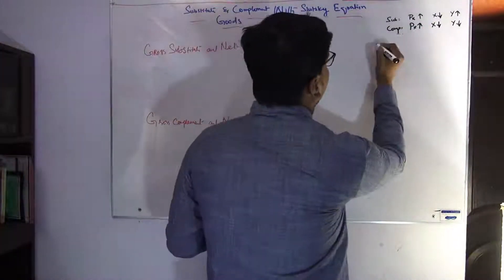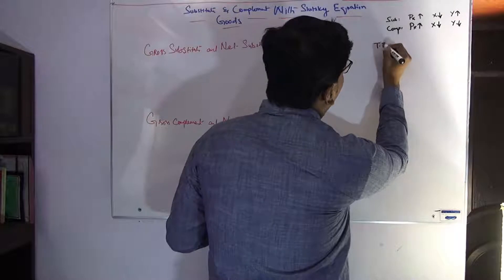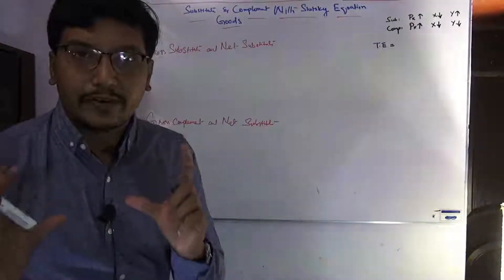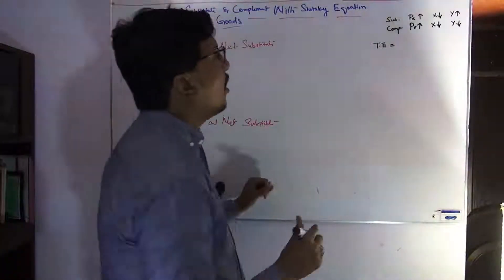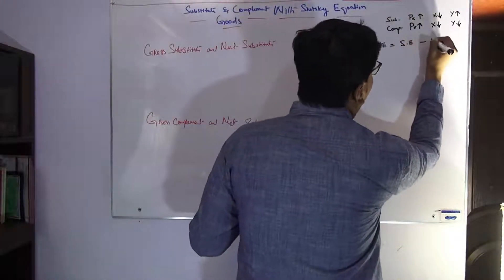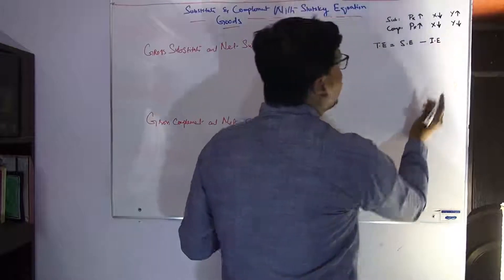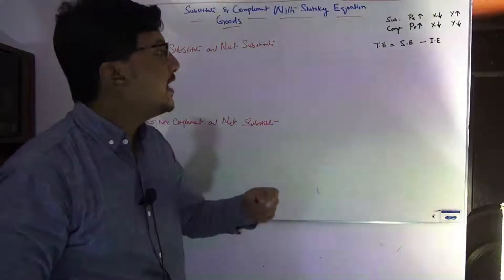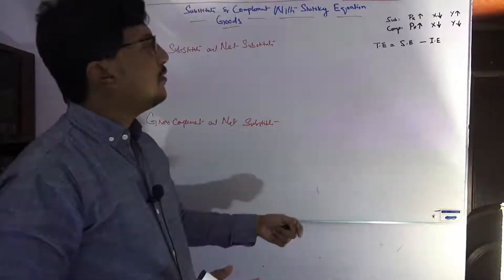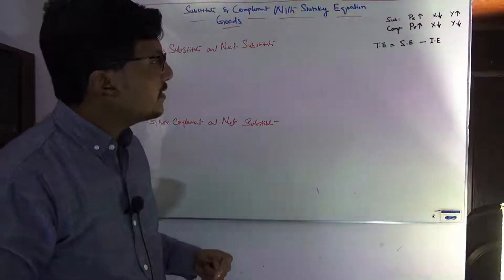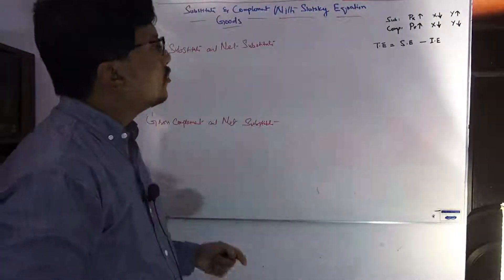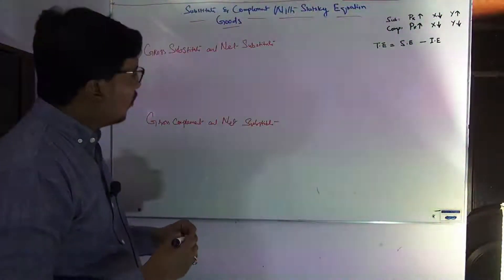In the Slutsky equation, the total effect is called the gross effect. The substitution effect occurs before the income effect, and after the income effect it is called the net effect. So the gross effect includes both substitution and income effects, while the net effect captures what remains after accounting for the income effect.